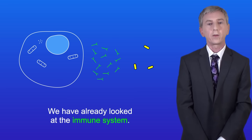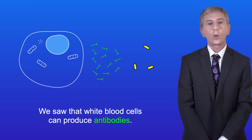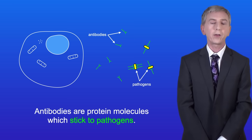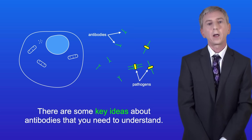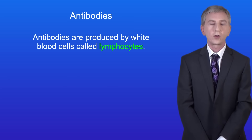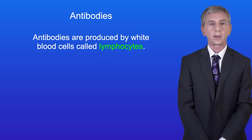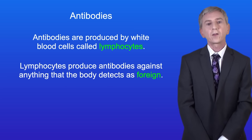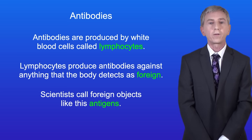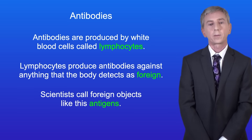We've already looked at the immune system. We saw that white blood cells can produce antibodies. Antibodies are protein molecules which stick to pathogens. Now there are some key ideas about antibodies that you need to understand. Firstly, antibodies are produced by white blood cells called lymphocytes. Secondly, lymphocytes produce antibodies against anything that the body detects as foreign. Scientists call foreign objects like this antigens.